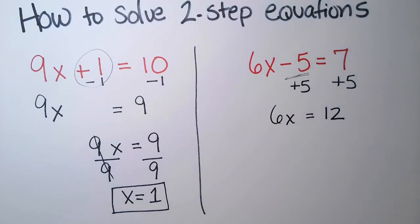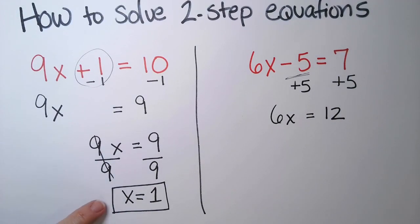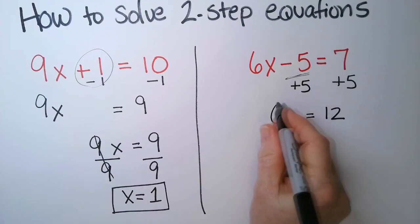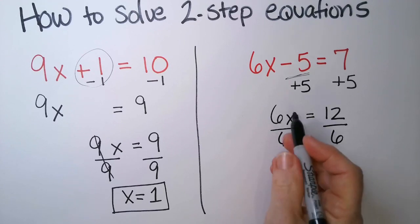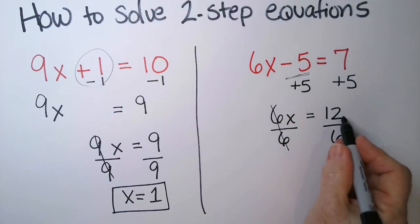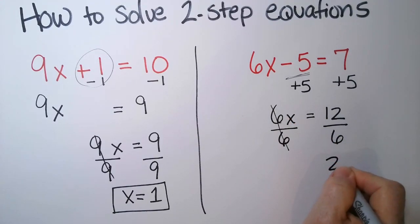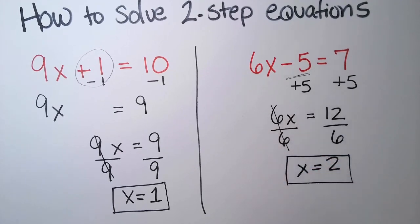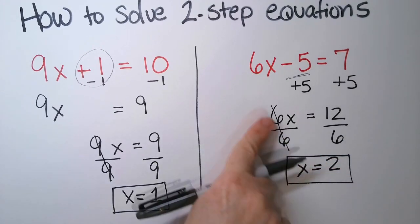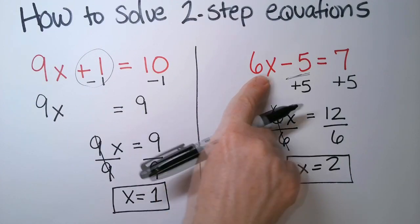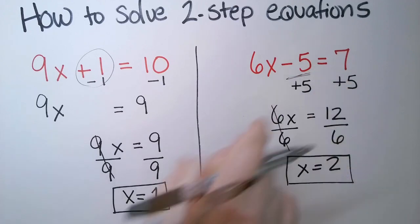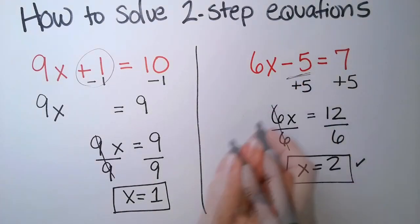We're not quite done yet, because we don't have x by itself. We want it to look like x equals something. There's a six in front of it, and to get the six away from the x, we're going to divide by six, because six over six is one. Twelve divided by six is two, so x equals two. In this case, if we put a two here, this is six times two is twelve, minus five actually does give you seven. So this is a unique solution for this equation.